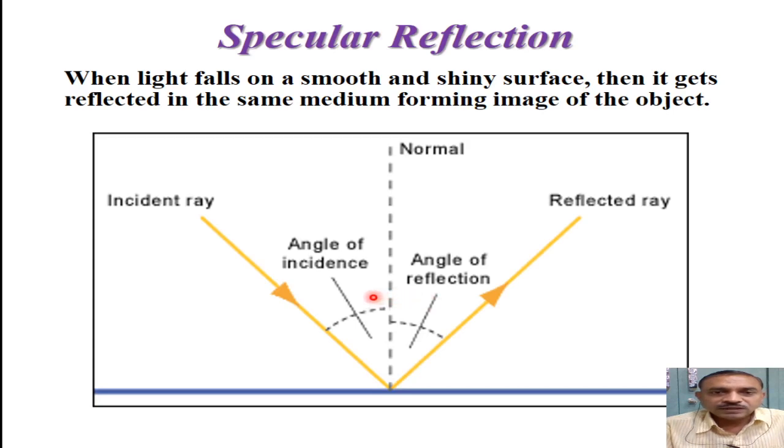It means that at what angle the incident ray is falling on surface, at the same angle with respect to normal, the same ray is going to be reflected. This kind of reflection is possible on polished and metallic surfaces.